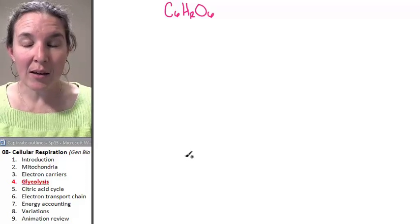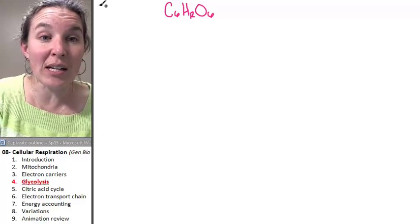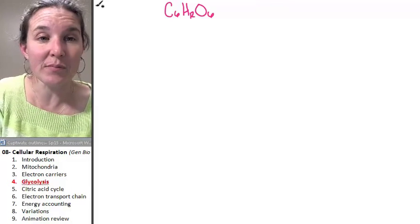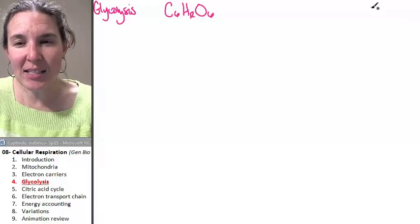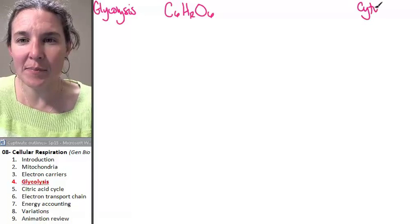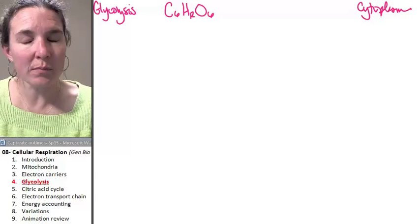There are three main stages in this process. The first one is called glycolysis, and glycolysis takes place in the cytoplasm, not the mitochondria.